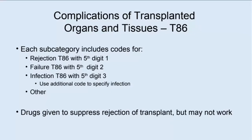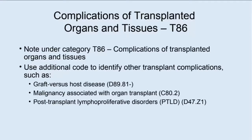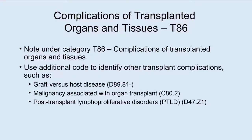The 'other' complications include problems during surgery such as laceration of an organ, or problems other than rejection, failure, or infection occurring after surgery. First you use the T86, then something more specific. Under T86 there is an important note: use additional code to identify other transplant complications such as graft-versus-host disease (D89.81 with additional digit), malignancy associated with organ transplant, and post-transplant lymphoproliferative disorders (PTLD). These are listed second after the T86 code.